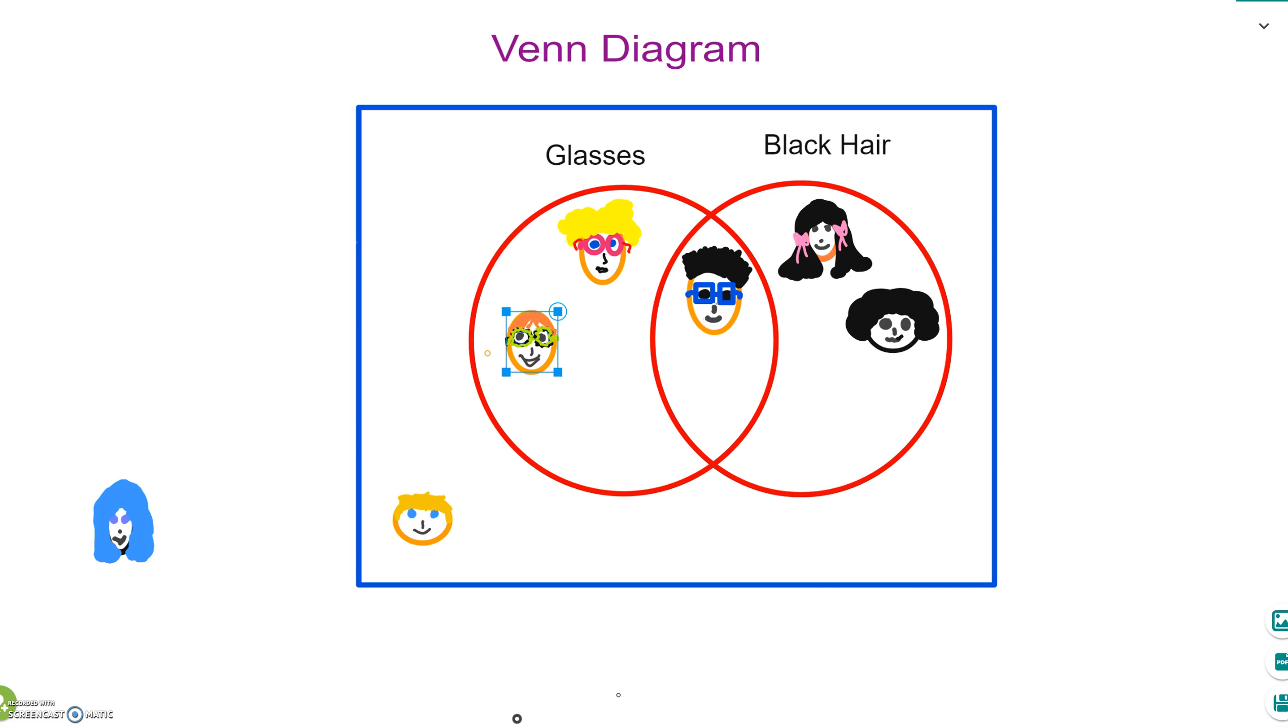The next one, the last one, definitely hasn't got black hair. She's got blue hair and no glasses, so she stays outside as well. So this is the basic principle of Venn diagrams: sorting out data. Hope you enjoyed that little session.